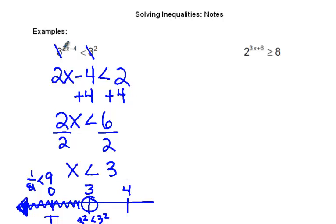Then we'll check 4. Plug in 4. 2 times 4 is 8. 8 minus 4 is 4. So, you get 3 to the 4th is less than 3 squared.